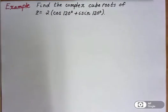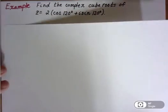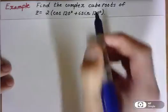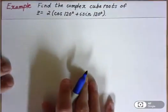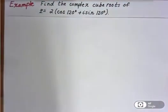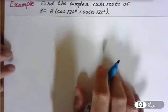So here is our problem. Find the complex cube roots of z equals 2 times the quantity cosine of 120 degrees plus i sine of 120 degrees.